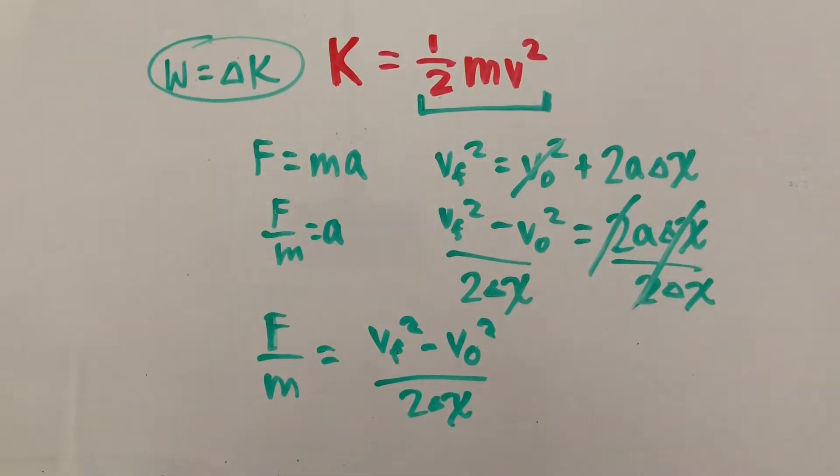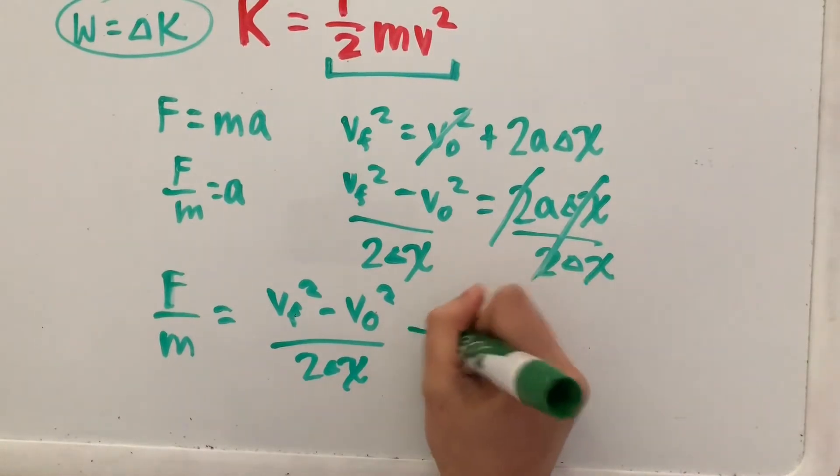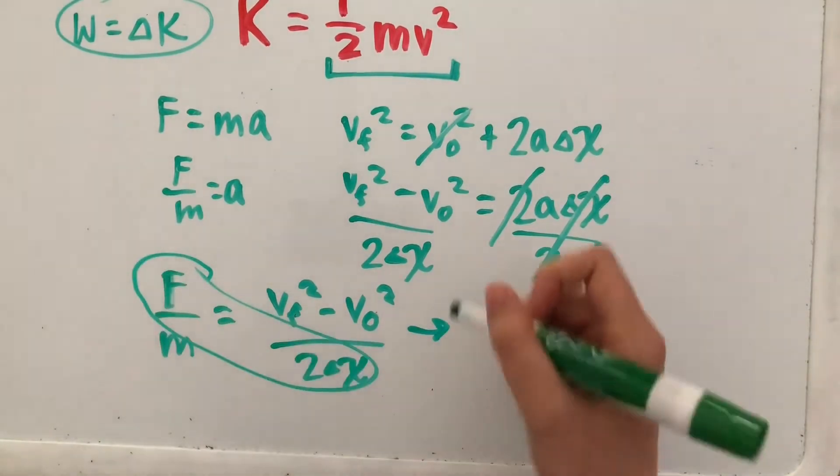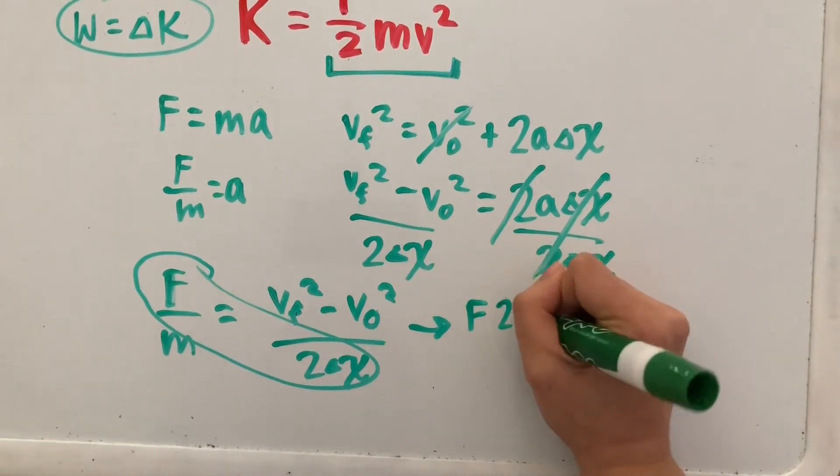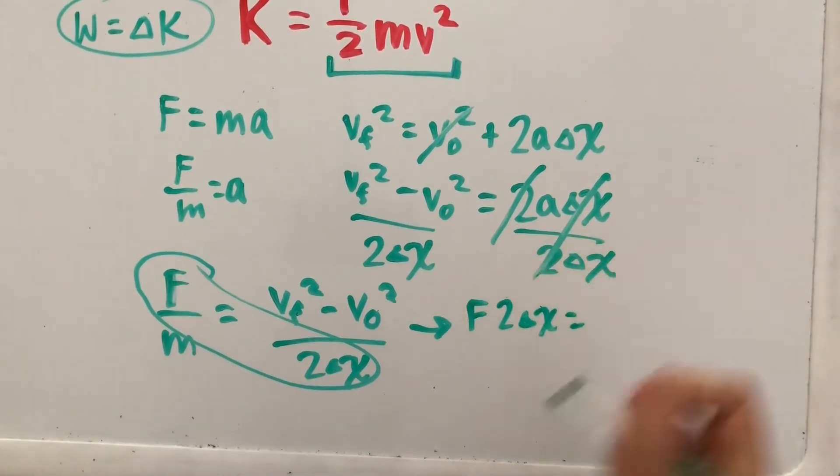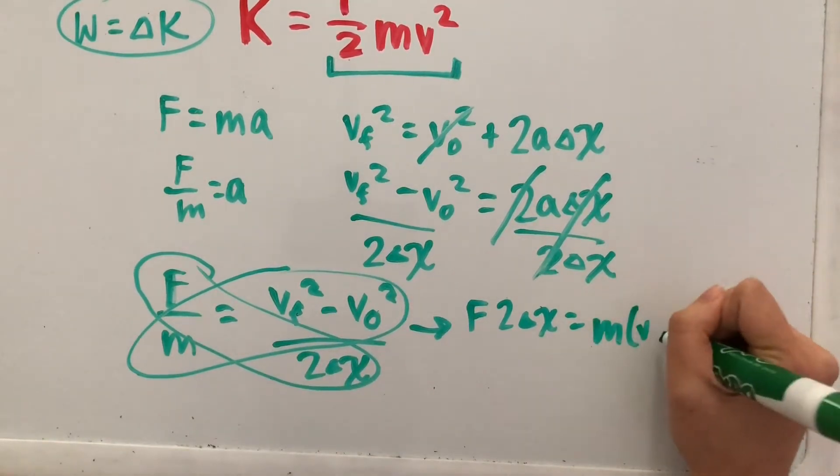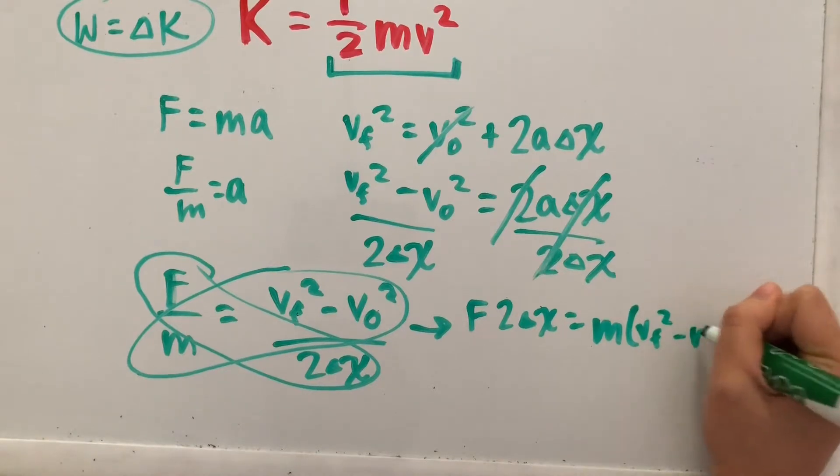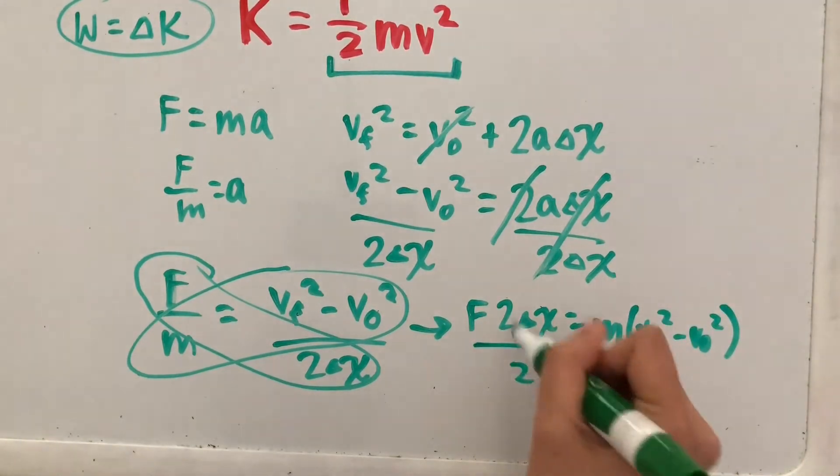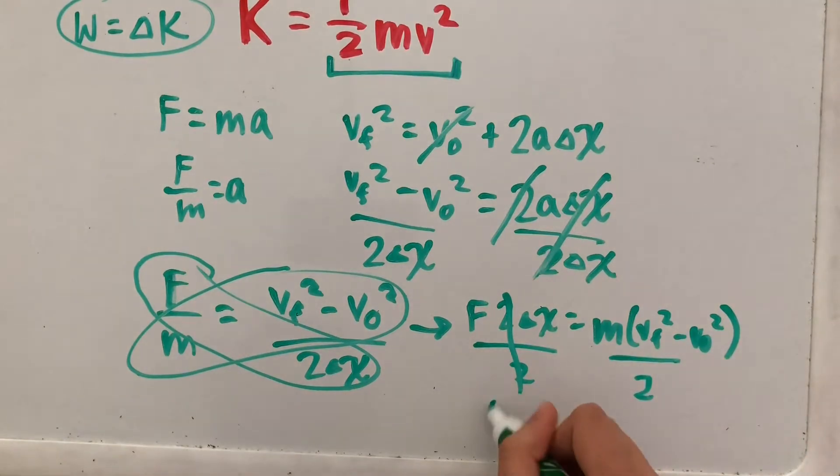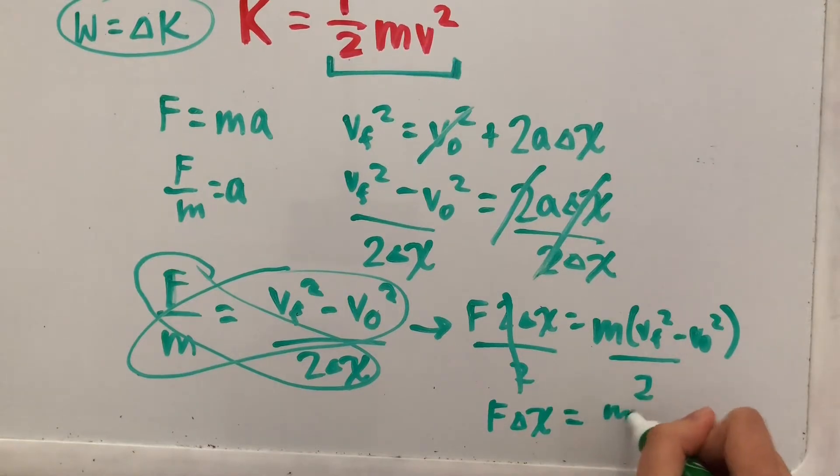Now let's cross-multiply and see what we get from there. So cross-multiplying this would give us force times 2 delta x, and that's equal to mass times final velocity squared minus initial velocity squared. Let's divide both sides by 2. So we get f delta x is equal to m times final velocity squared minus initial velocity squared over 2.